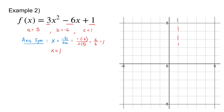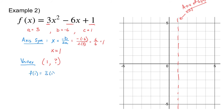There's my axis of symmetry at x equals 1. Once I have it, I can find the vertex. The x value of the vertex is 1, and to find the y value I plug 1 into the original equation: 3 times 1 squared minus 6 times 1 plus 1. That gives me 3 minus 6 plus 1 equals negative 2. So my vertex is at 1, negative 2.